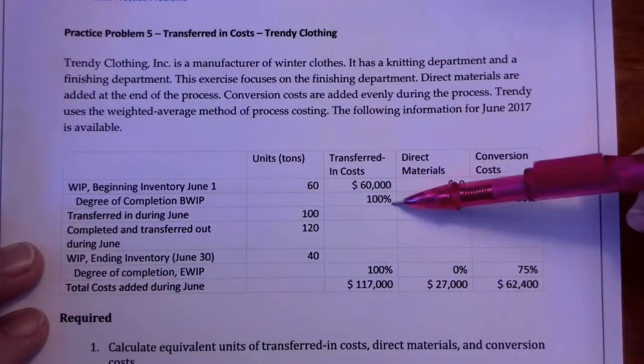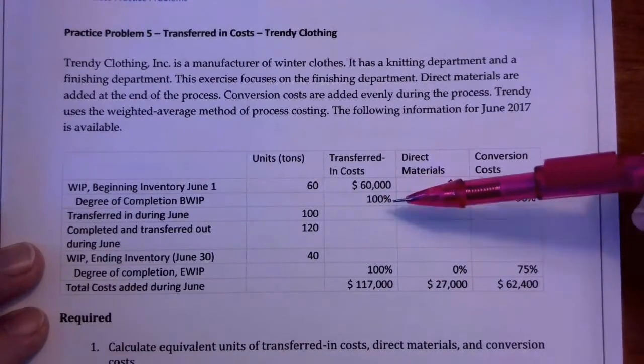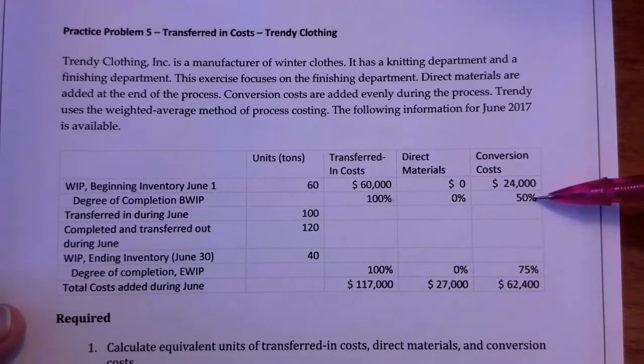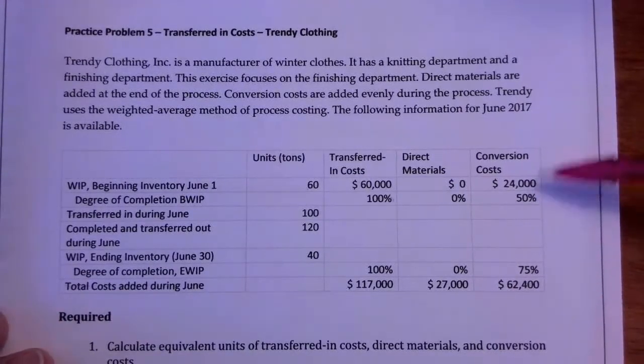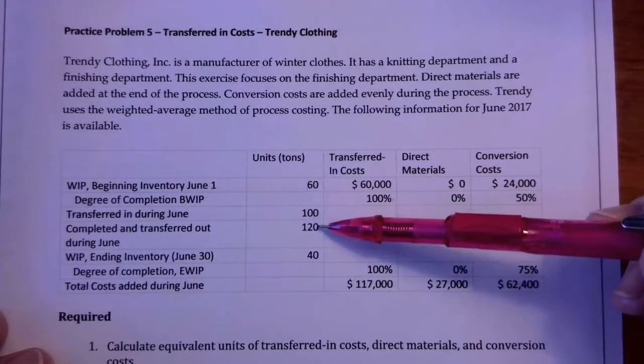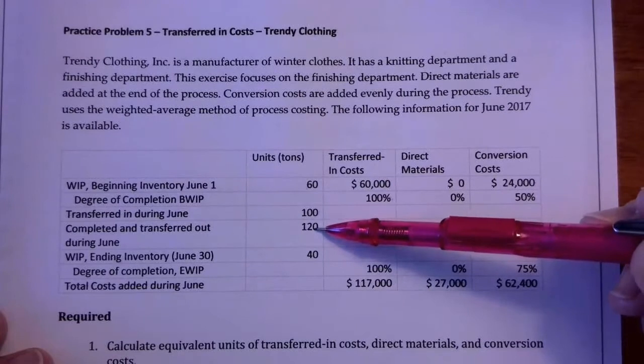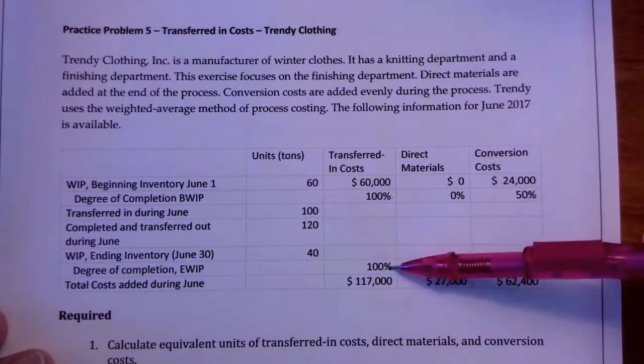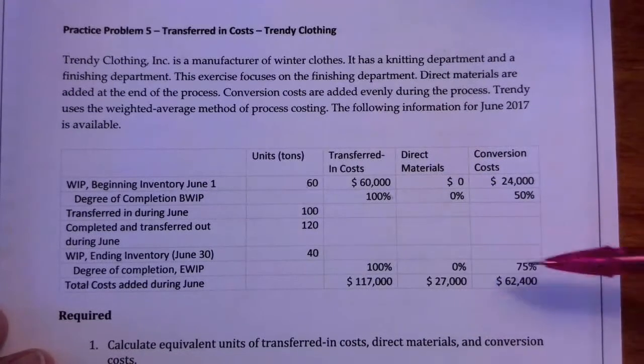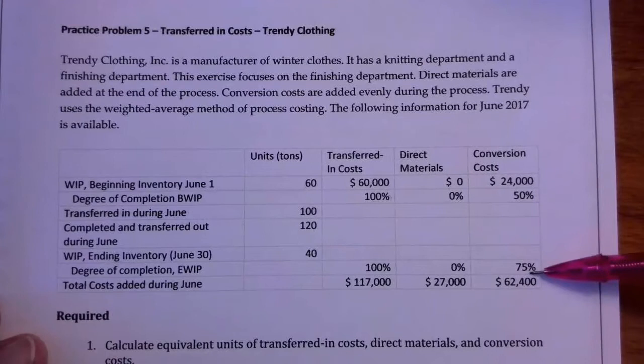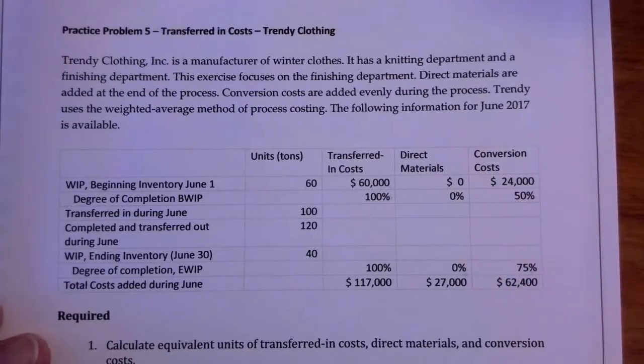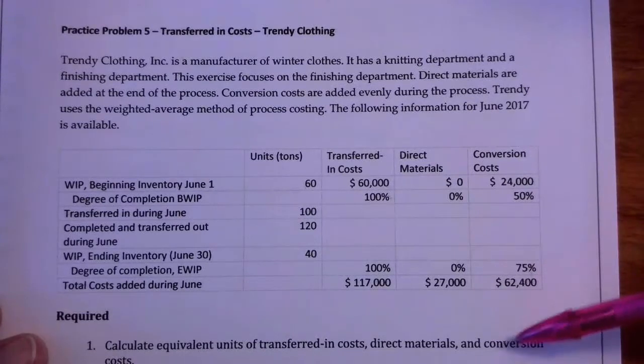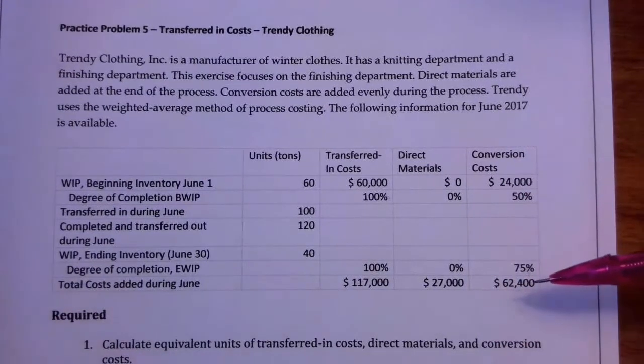So we've got conversion costs then of $24,000. And the transferred-in costs are always 100% complete. Direct materials, there's nothing there. And then conversion costs are 50% complete in beginning work-in-process. So they transferred in 100 units, completed and transferred out 120, and ending work-in-process is 40 units. That's 100% complete for transferred-in costs, 0% for material, and 75% for conversion. Don't forget they add the material at the end of the process, and we're at 75% through, so there wouldn't be any right now.